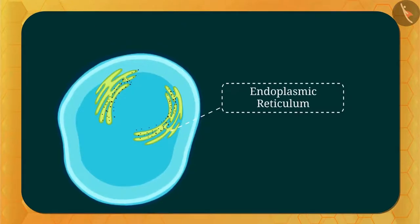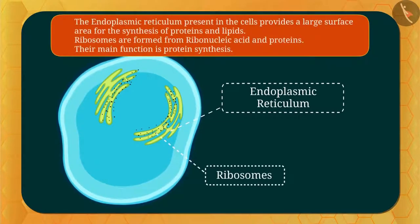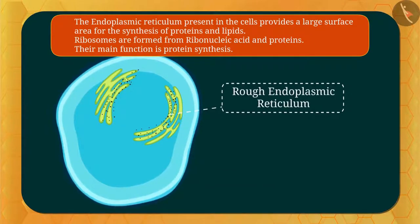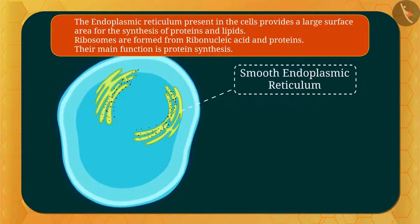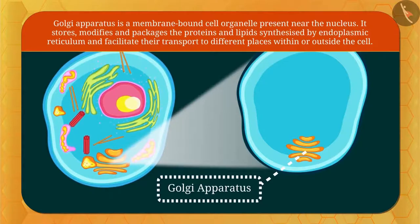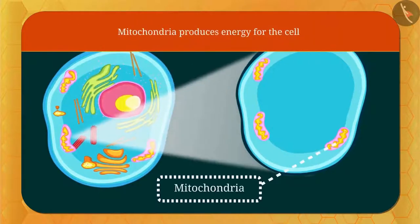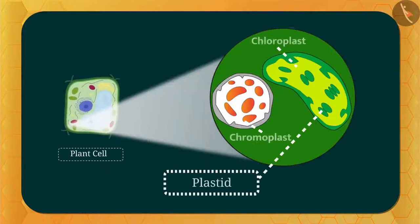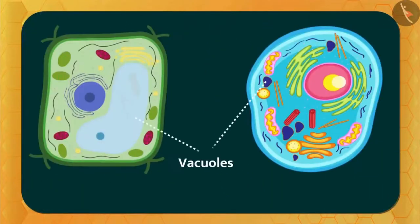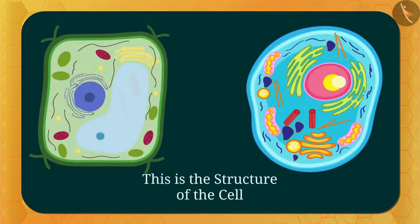Cells also have very important parts surrounded by a layer — called cell organelles. These cell organelles float in the cytoplasm and each has its own important function. We have the endoplasmic reticulum, and the black dots on its surface are called ribosomes. The endoplasmic reticulum containing ribosomes is called rough endoplasmic reticulum, while those without ribosomes are called smooth endoplasmic reticulum. Next are the Golgi apparatus, lysosomes, mitochondria, plastids — found only in plant cells — and vacuoles, which are very large in plant cells and very small in animal cells.